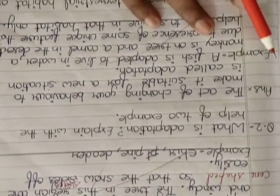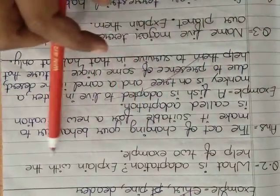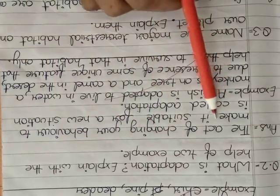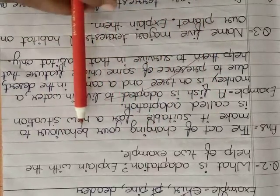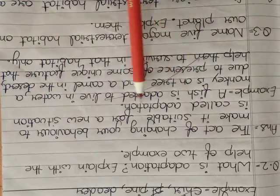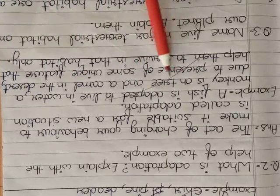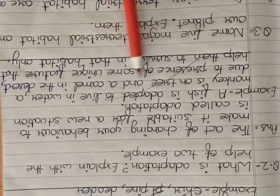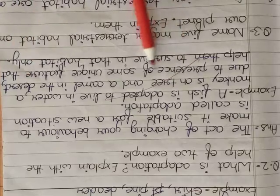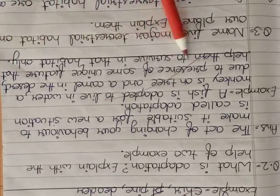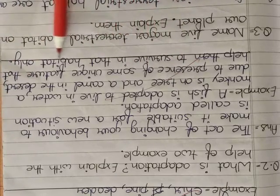Next question is What is adaptation? Explain with the help of two examples. The act of changing your behavior to make it suitable for a new situation is called adaptation. Example, a fish is adapted to live in water, a monkey is adapted to live on a tree, and a camel in the desert due to presence of some unique features that help them to survive in that habitat only.